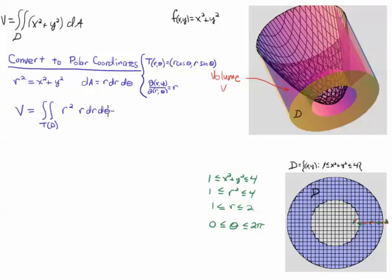So, now we have everything we need to compute this volume. So, we convert x squared plus y squared to r squared, as we did here. The r, dr d theta, comes from the Jacobian times the dr d theta, which is our area element.